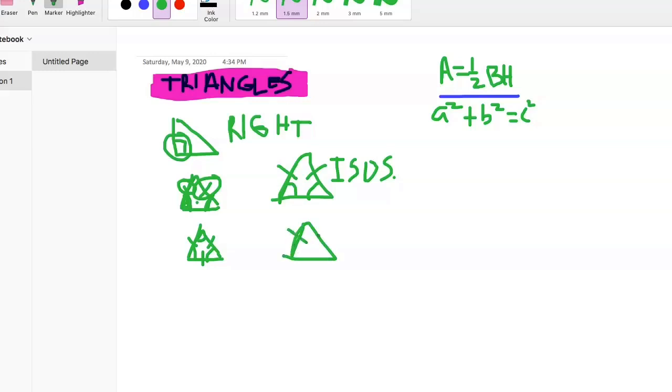And then down at the bottom one, you have all three sides are equal - they all equal the same amount - and all three angles are equal. That's called equilateral.